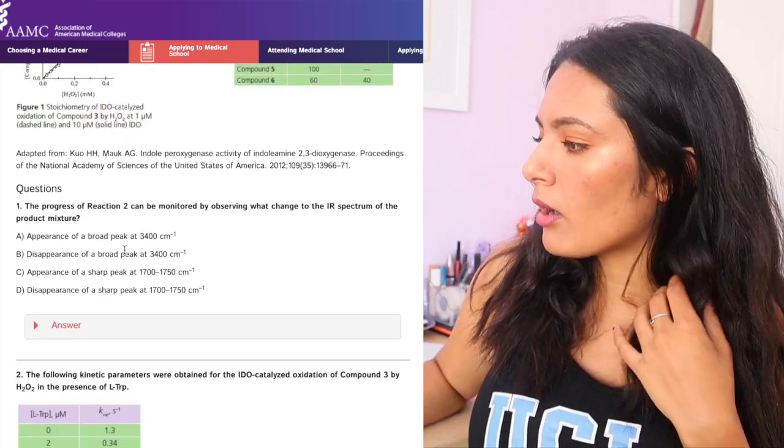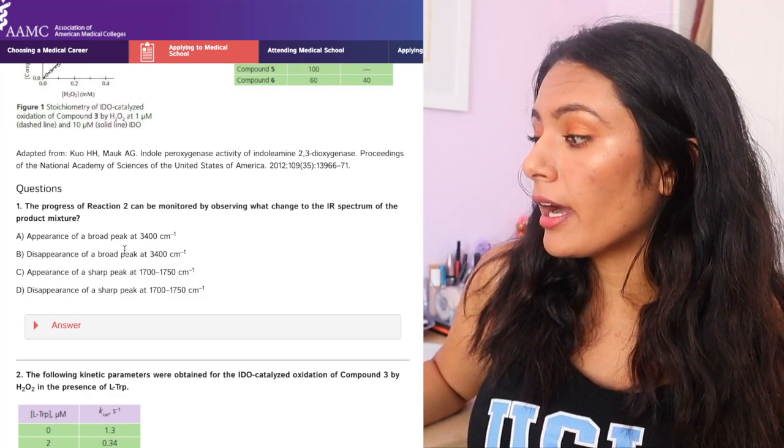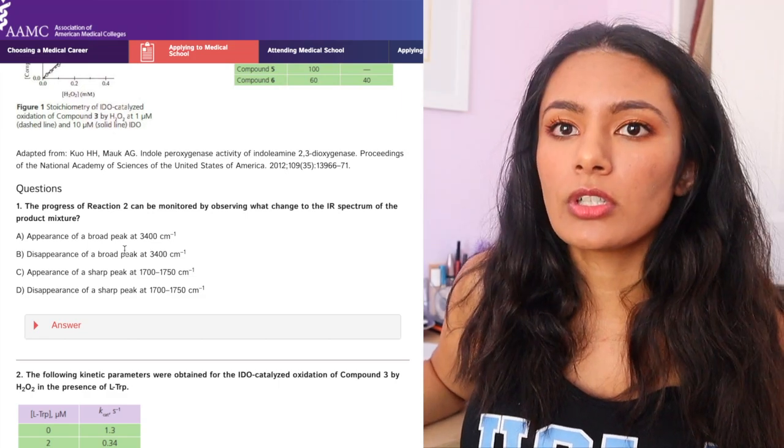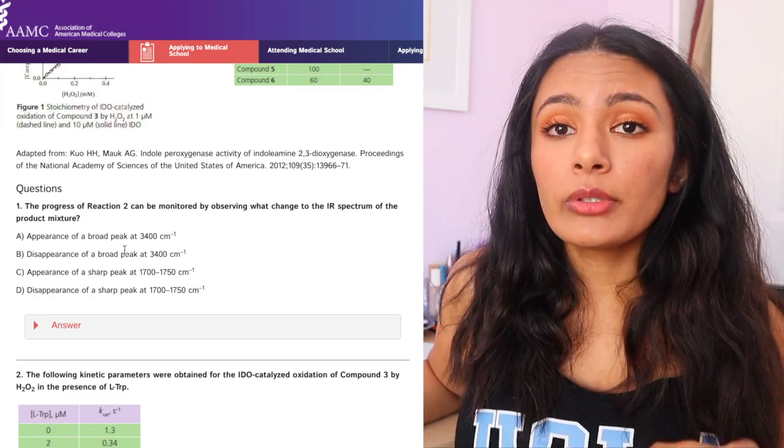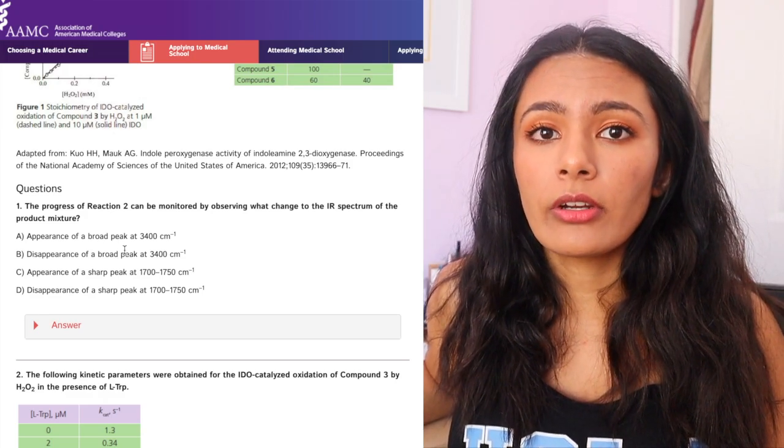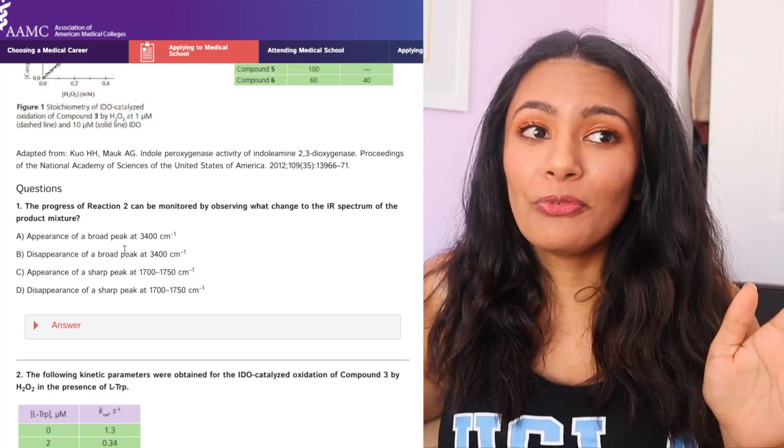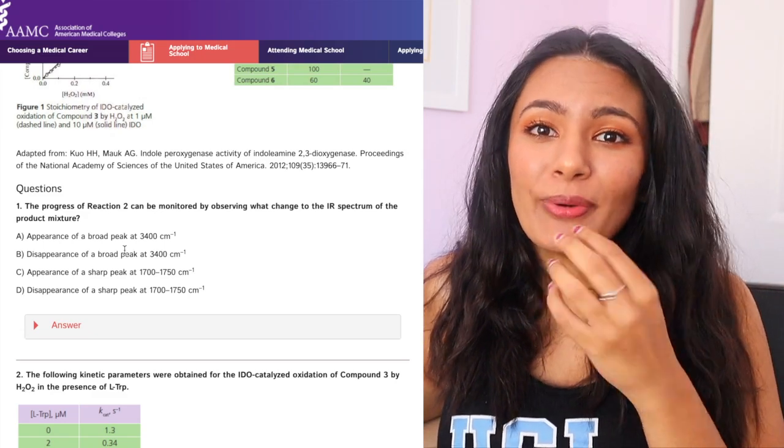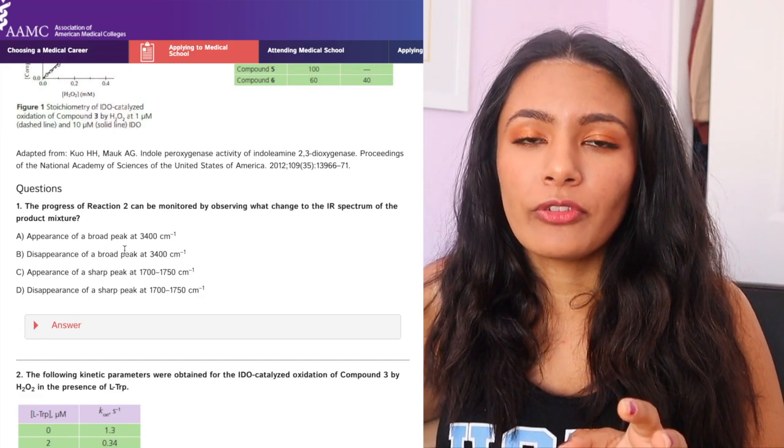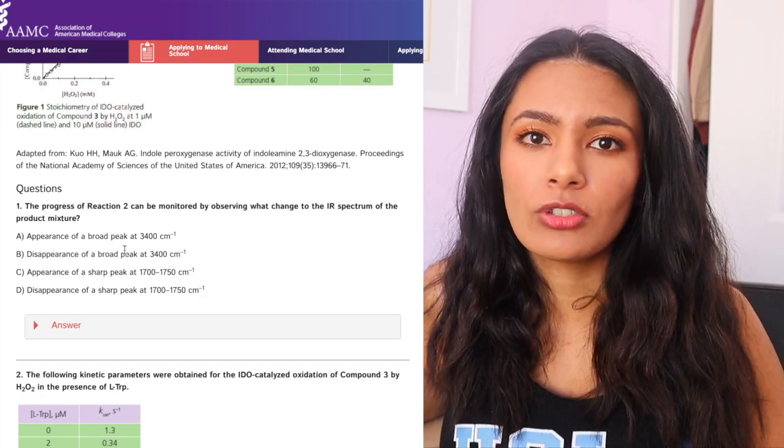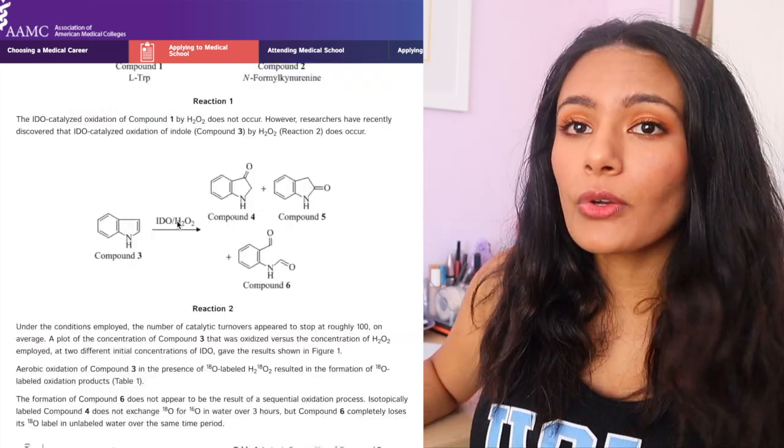Okay. Progress of reaction 2 can be monitored by observing what changed to the IR spectrum of the product mixture. Okay, so all I really need to look at and go back in the paragraph is look at what reaction 2 looks like and then I'm going to hopefully remember my IR spectra, but a lot of it is just recall for information. You don't need to read that entire passage to know how to answer this question.